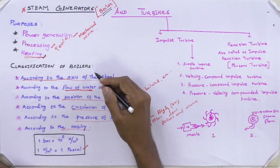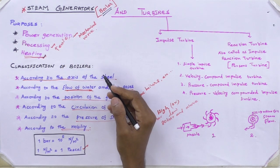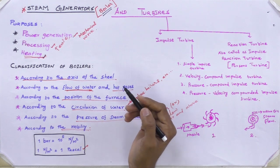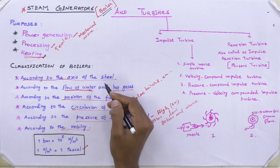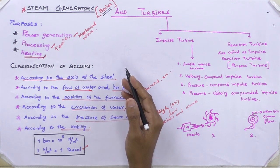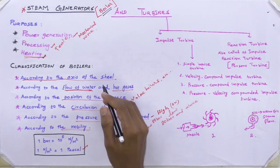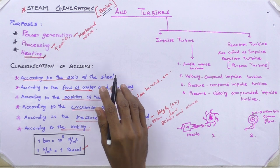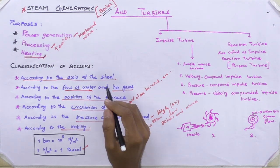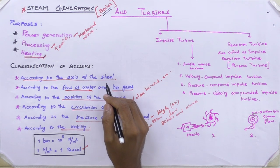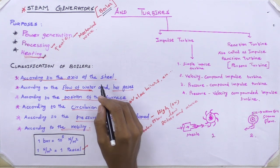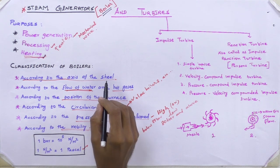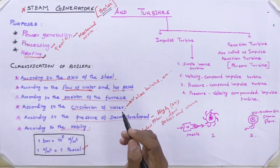There are some classifications. First, according to the axis of the shell, boilers may be classified as horizontal, vertical, or inclined. For example, vertical boilers occupy less space. The simple vertical boiler is the best example for this classification.